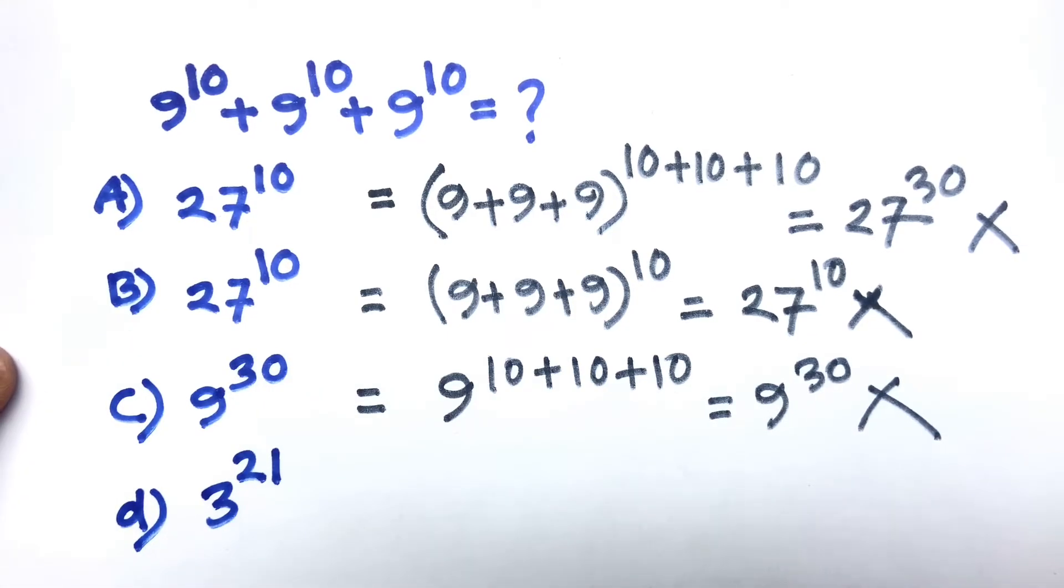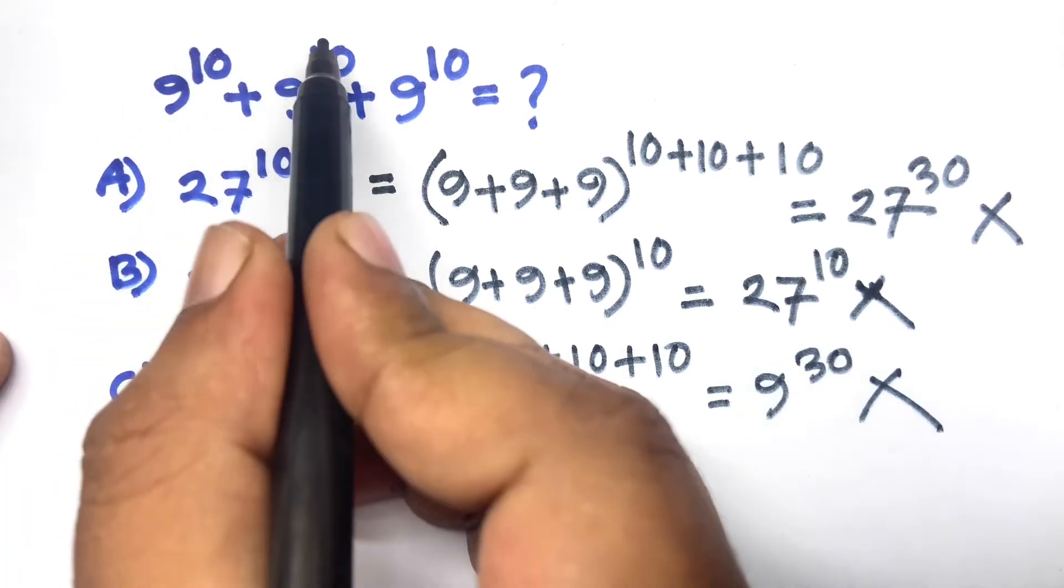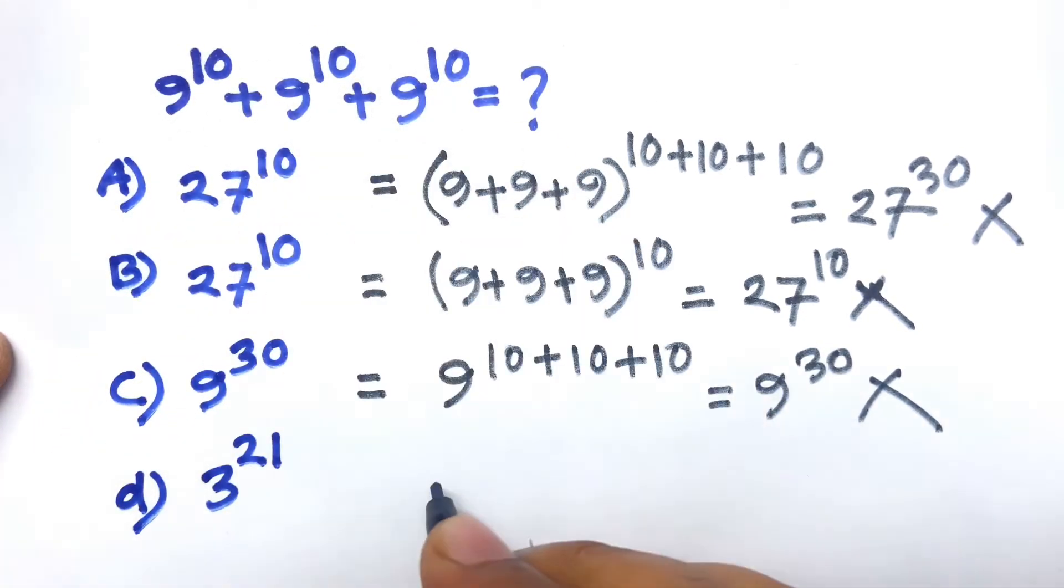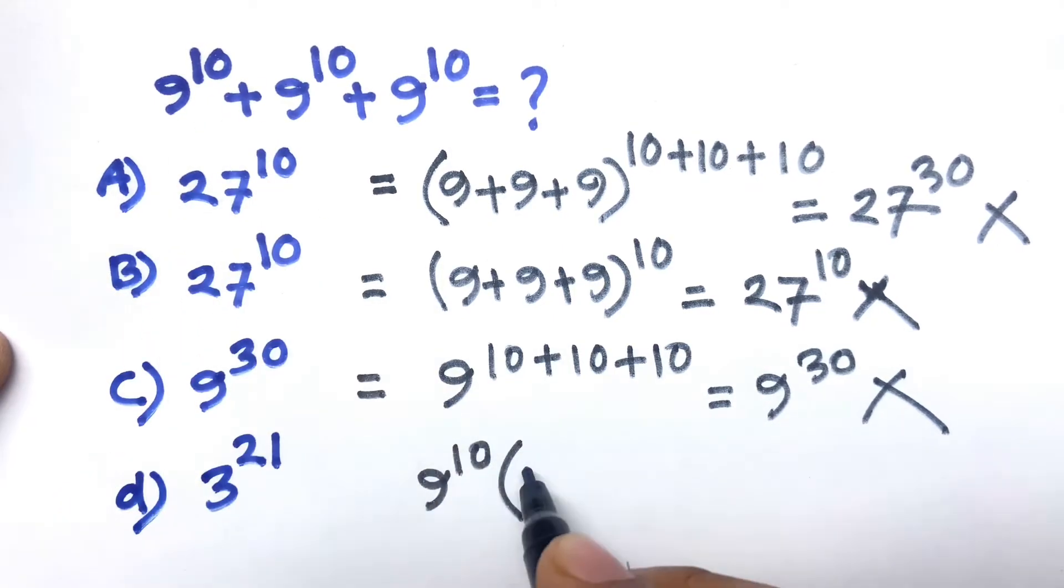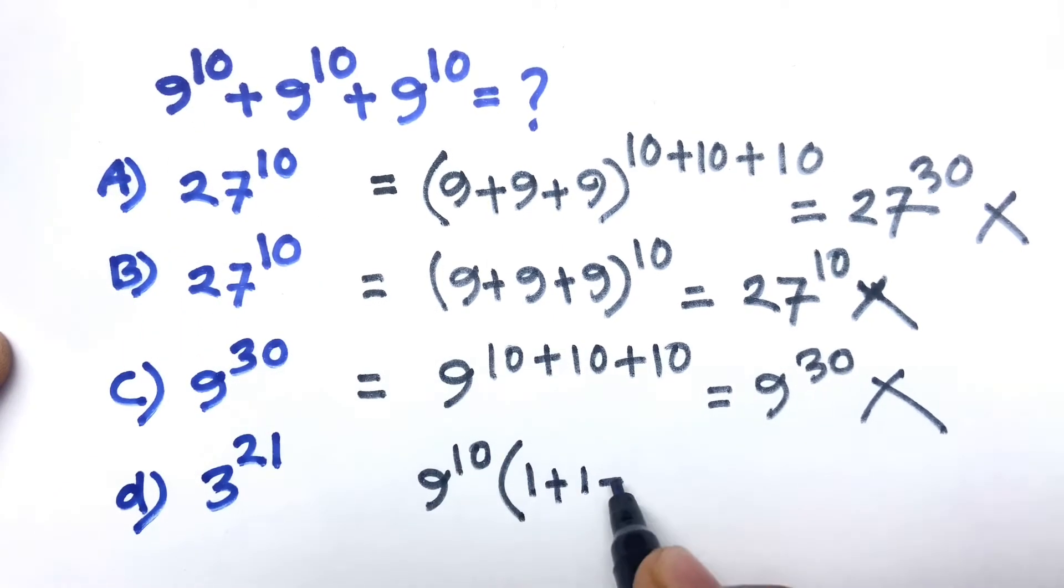Let's check. Here is 9^10 + 9^10 + 9^10. I can see easily 9^10 is common. This time I can say 1 + 1 + 1, here is 9^10 times 3.